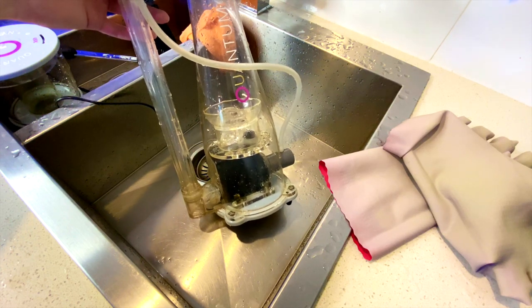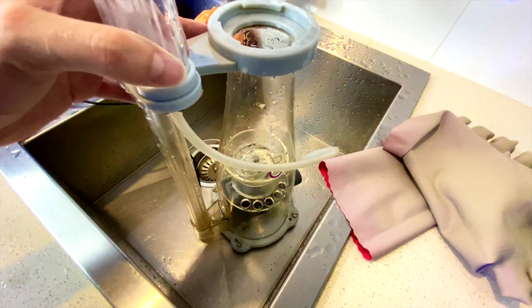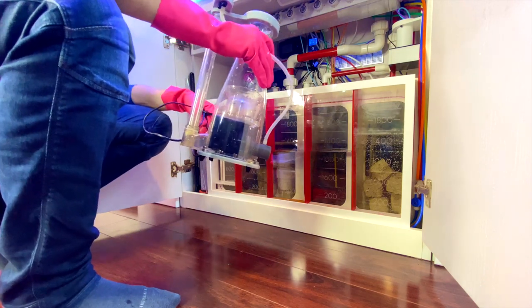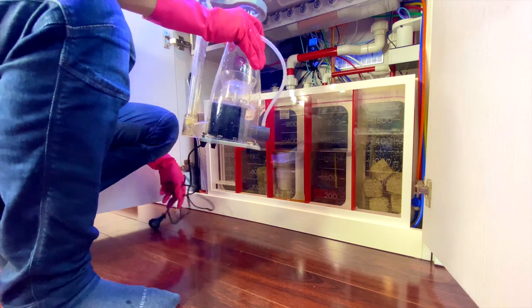All right, so that's the skimmer put back together and clean. One more thing to do is just to put it back in the sump. All right, so now I just need to put the skimmer back in the sump and feed the power cable back through again and we'll be good to go.